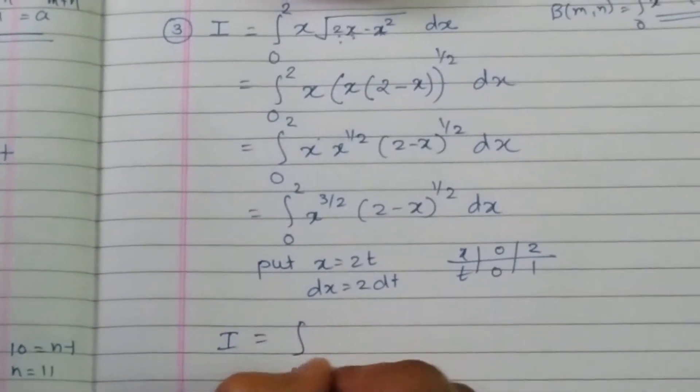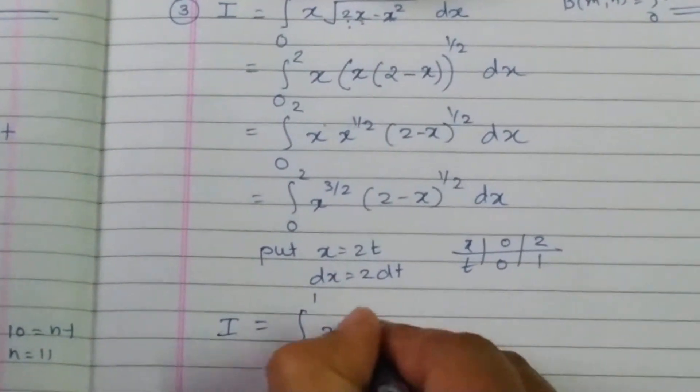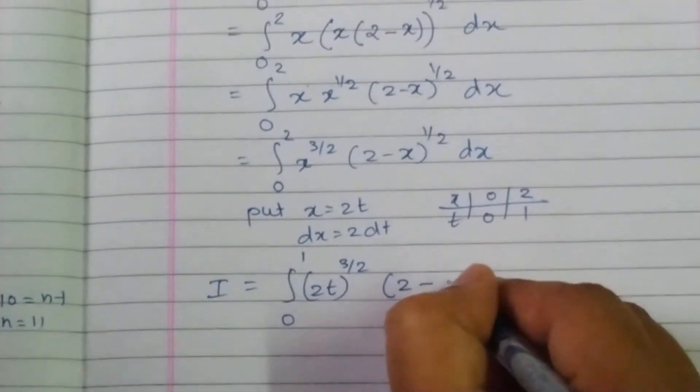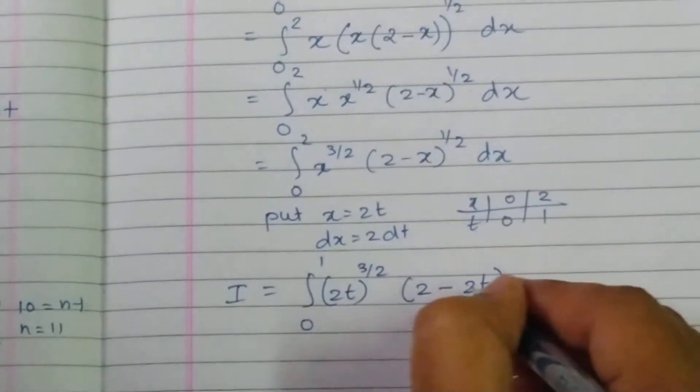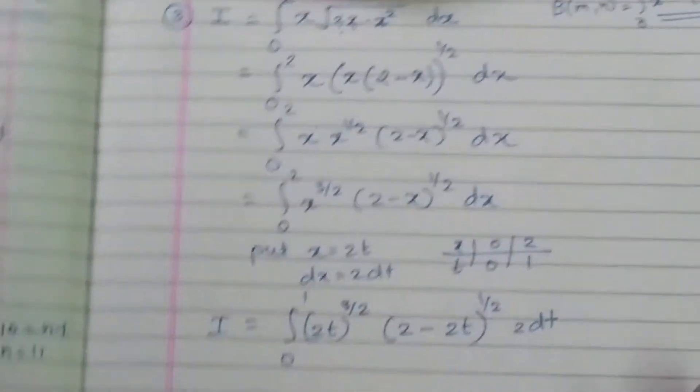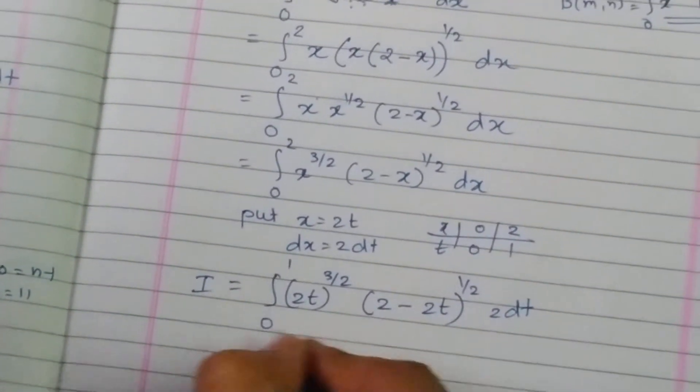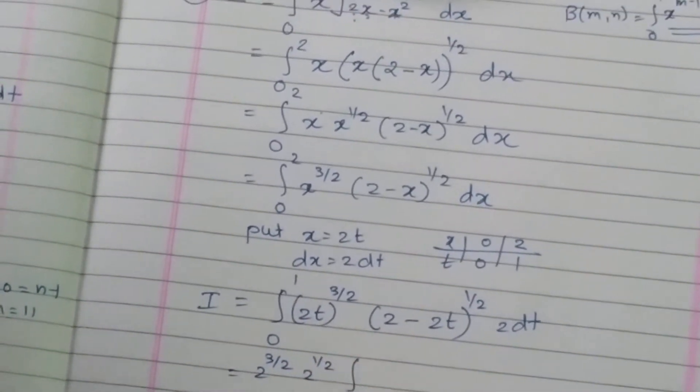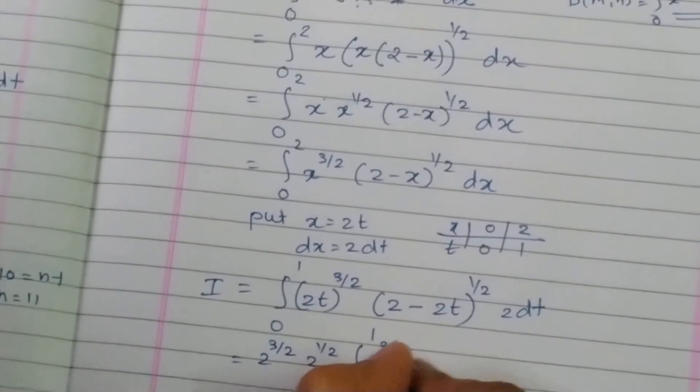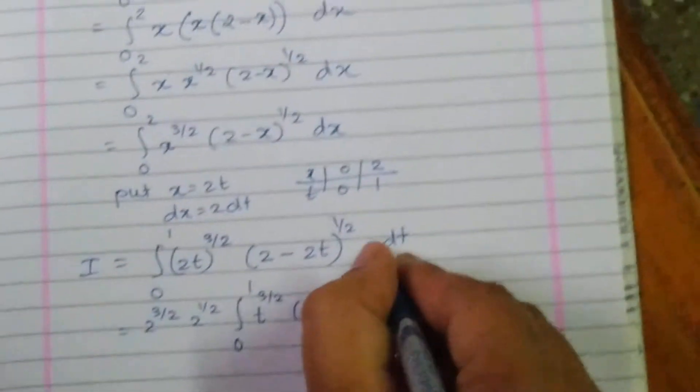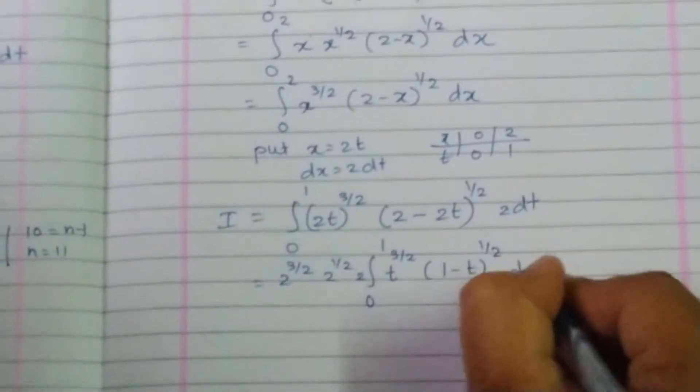So my integral I becomes integration from 0 to 1, 2t raise to 3 by 2, times 2 minus 2t raise to 1 by 2, dx is replaced by 2 times dt. From this we can take two common. So this is 2 raise to 3 by 2. From here I am getting 2 raise to 1 by 2. Integration from 0 to 1, t raise to 3 by 2, 1 minus t raise to 1 by 2, into dt.